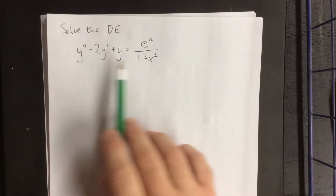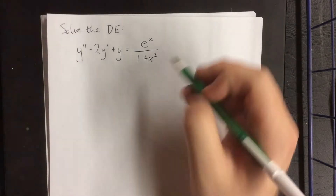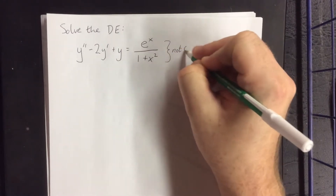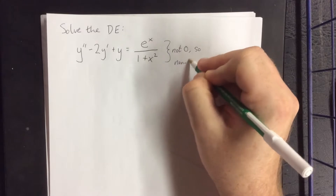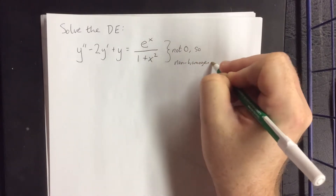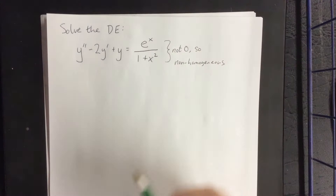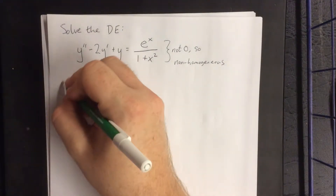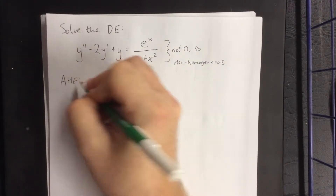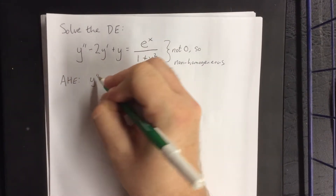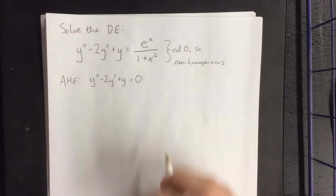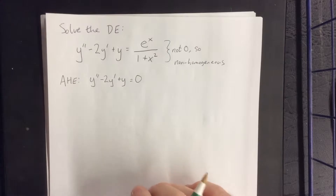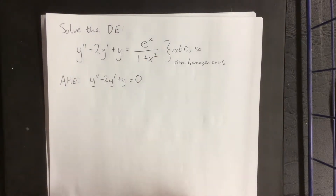Given that it's second order, constant coefficient, and just as important, this is not zero — so non-homogeneous. Any time we want to solve a non-homogeneous differential equation, the first thing we're going to do is solve the associated homogeneous equation. The associated homogeneous equation being y double prime minus y prime plus y equals zero — same exact thing, just without the function of x on the right-hand side.